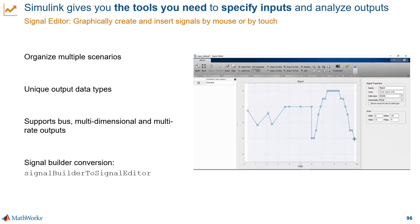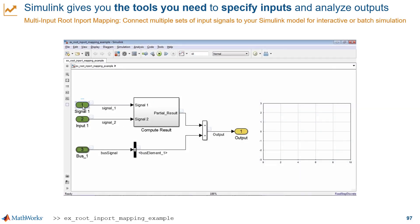If you still have models that use the signal builder, keep in mind that it is a legacy block with some limitations. You can use the signal builder to signal editor migration function to migrate your models to the new block. Another way to specify model inputs is with the import mapping tool.